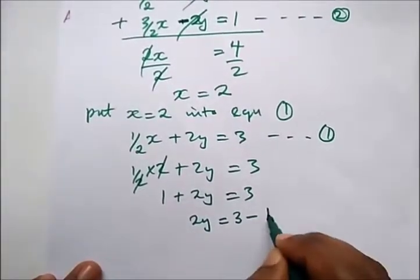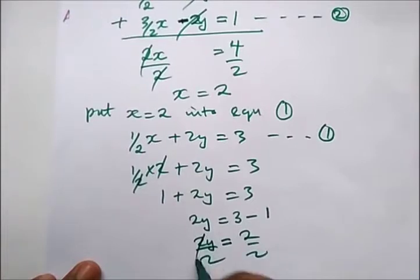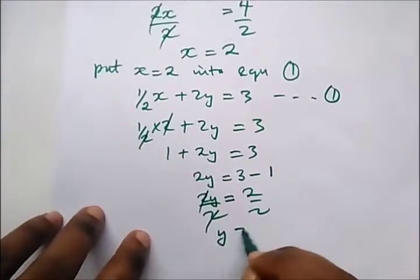So this is 2y, take 1 to the other side we have 3 minus 1. So from here we have 2y is equal to 2. Divide both sides by 2. What do we have? We have y is equal to 1.